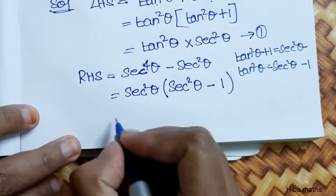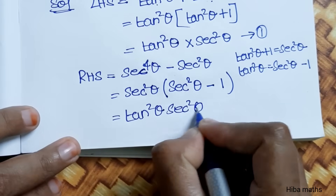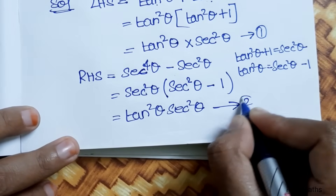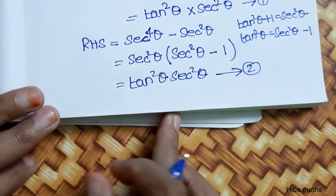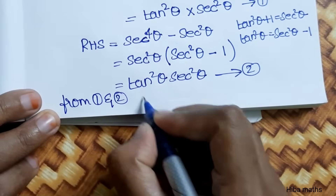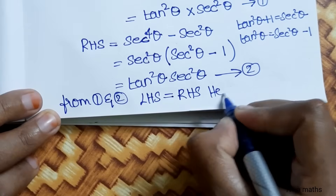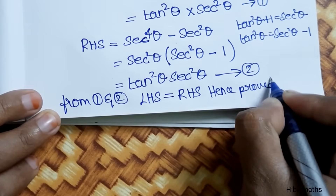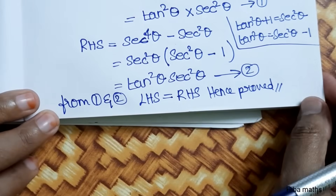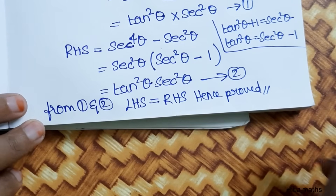So we write tan²θ · sec²θ from both results. From results 1 and 2, LHS = RHS. You can try to understand this term and work through it yourself. Thank you so much for watching.